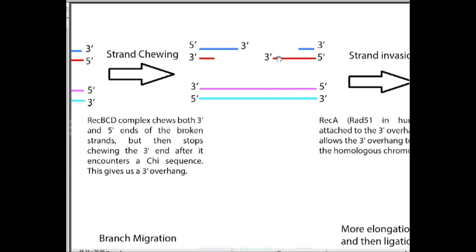Before that can happen though, a number of proteins called REC-A bind to the three prime overhang. This allows this three prime overhang to search for a place in this homologous chromosome where the sequence is almost or pretty much identical to the sequence here.